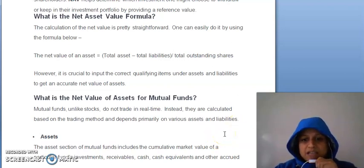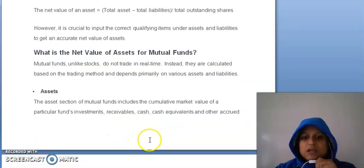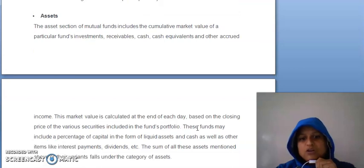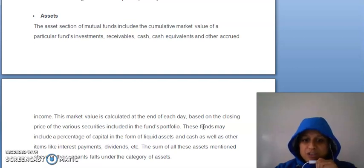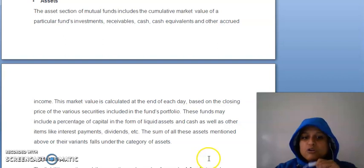Toh isme calculate karne ke liye, sabse pahle hum asset sections mein likhte hain. Asset section jo hai mutual fund mein, usmein aap cumulative market value nikalte ho particular fund ki investments ki, jismein receivables, cash, cash equivalents, other accruing income include ho sakti hain. Jo market value hai at the end of each day, jo bhi aapka closing price hoga different securities ka jo aapke fund ke portfolio ki hain, unki market value aap nikalte ho, aur ek percentage jo hai capital ka in the form of liquid assets, cash, ya other items jaise interest payment, dividend sector, woh sara calculate aap karte ho, aur usko total aap karte ho jo aapke fund ke portfolio mein aata hai.